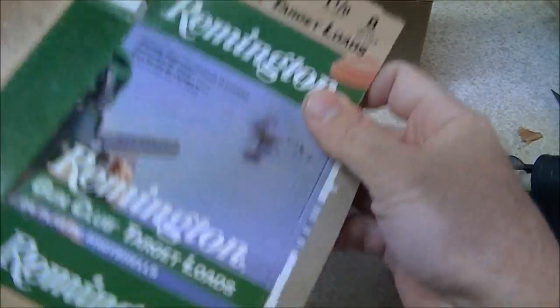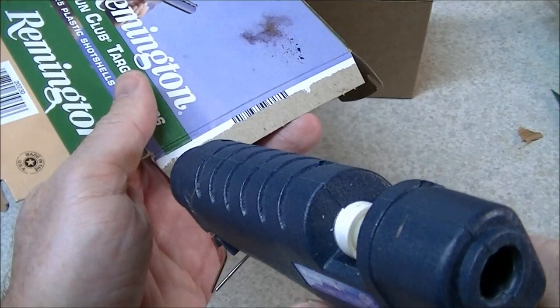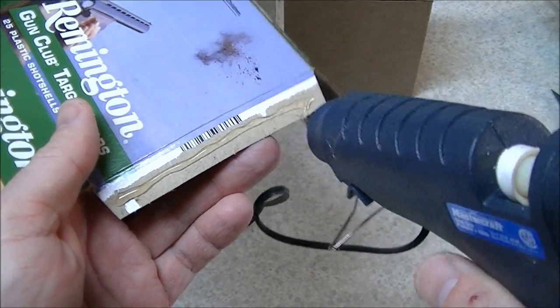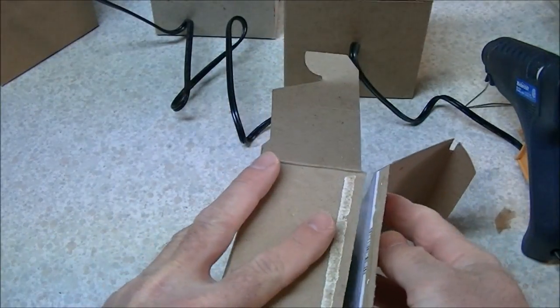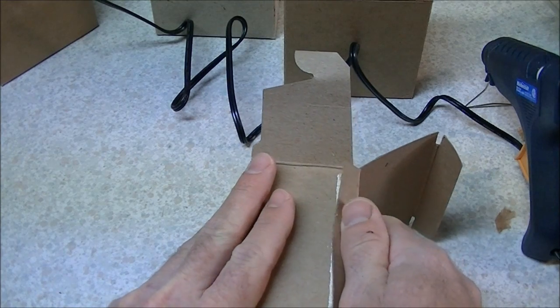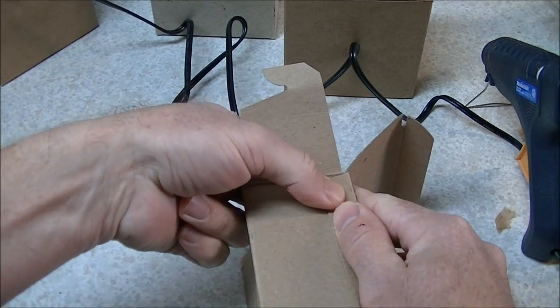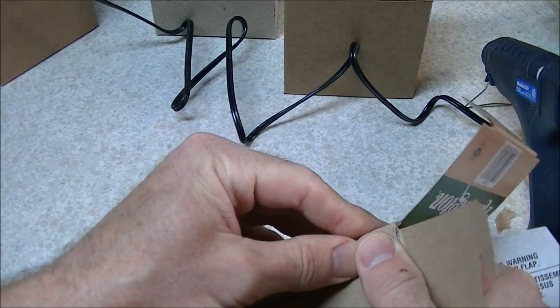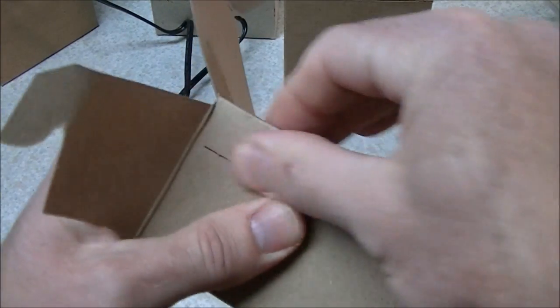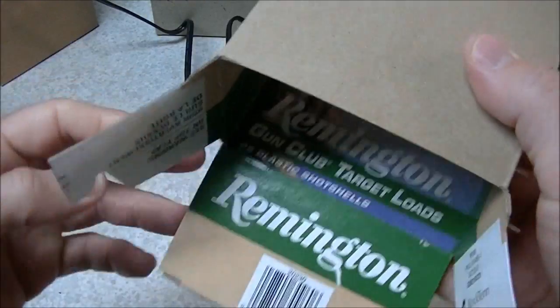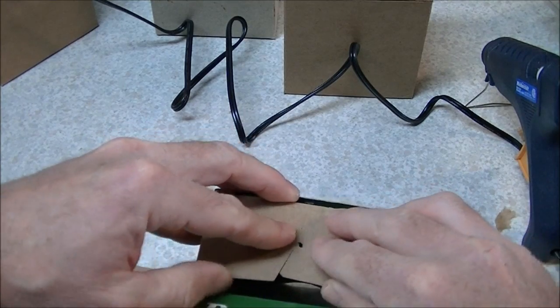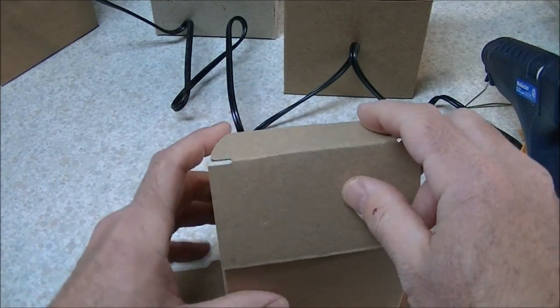So these, like I said, are the same thing as the Federal boxes, only with one seam instead of two. Now I don't think I'm going to bother doing this for all my shotgun reloads, because I do shoot quite a bit. But it will be nice to have a few of these boxes around for buckshot loads and slug loads and that sort of thing.